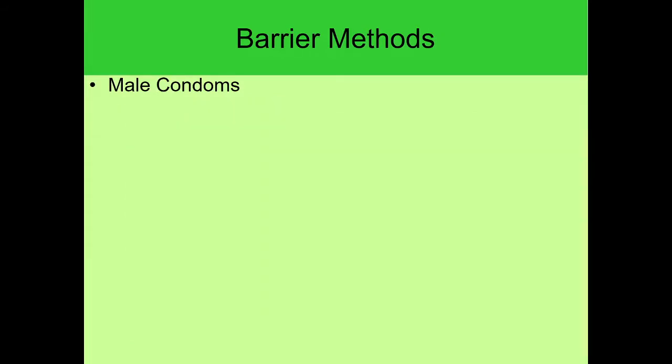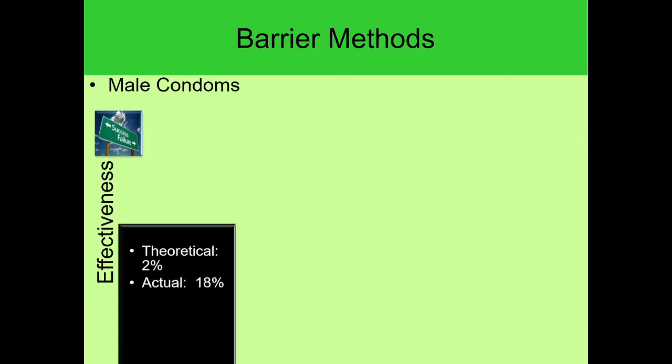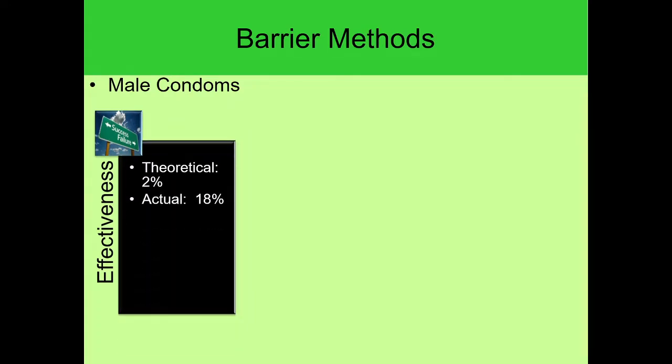The problem is a lot of people don't use them correctly. So I thought I'd talk about the effectiveness. Theoretically, two percent of the time a person who's using condoms for a year, a woman should end up pregnant after that time. When in actuality it's more like 18 percent. A lot of people who use condoms do not use them correctly.